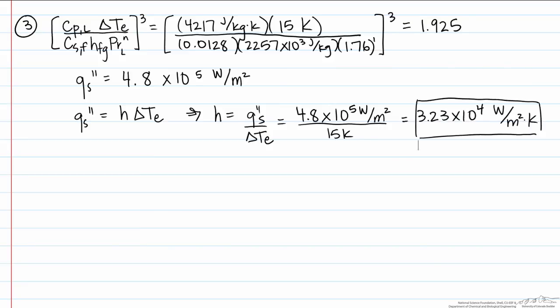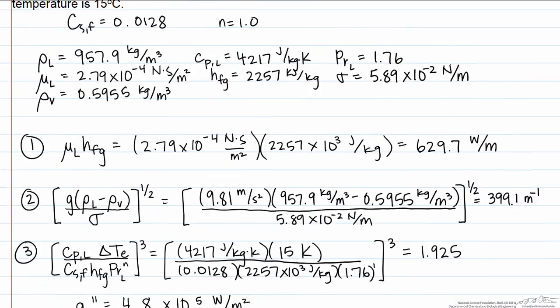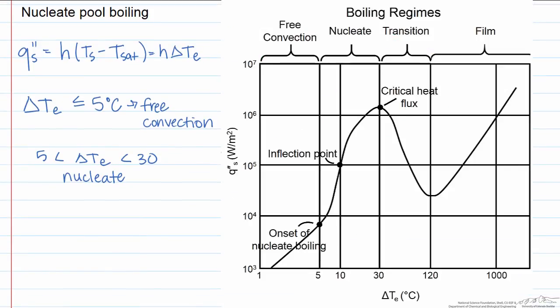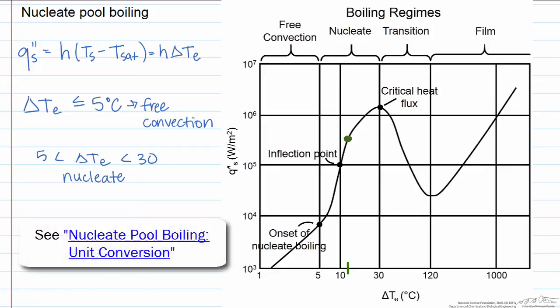Before we finish this, let's do a couple of checks. If we look back at this chart and estimate where delta T e is 15, and you go up to here, you'll see that we are in the ballpark with our values. As it turns out, determining that the units match is a little bit more complicated. If you'd like to see how I did it, I can refer you to another screencast.